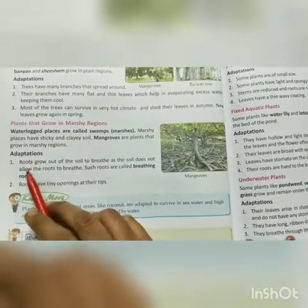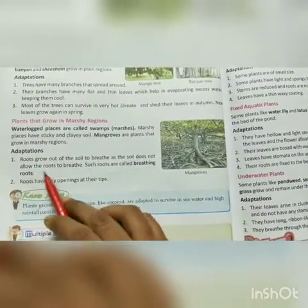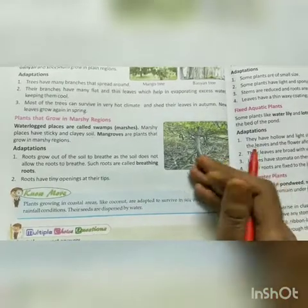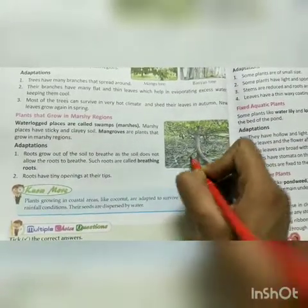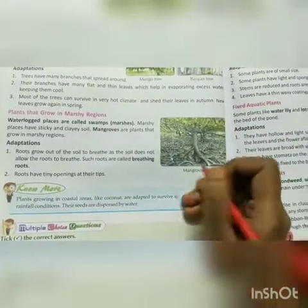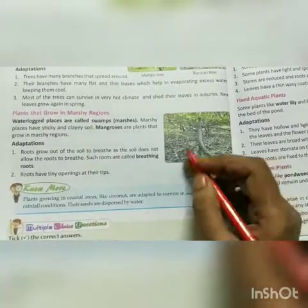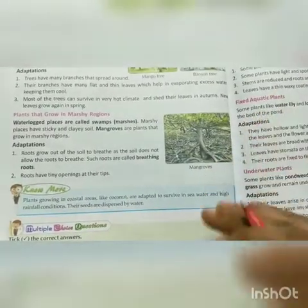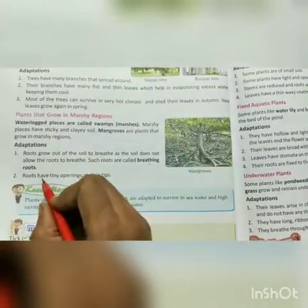Adaptation — how do mangroves adapt? Roots grow out of the soil to breathe, as the soil does not allow the roots to breathe. जो plant की roots हैं वो soil के ऊपर आ रही हैं — सिर्फ जमीन के अंदर नहीं, ऊपर भी हैं। क्योंकि यहाँ की soil उनको अच्छे से breathe नहीं करने देती। Such roots are called breathing roots। Marshy places में grow करने वाले plants की ऐसी roots को breathing roots कहते हैं।